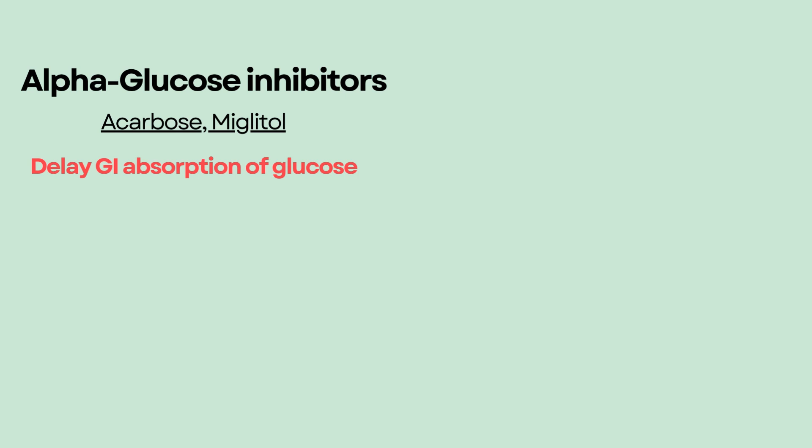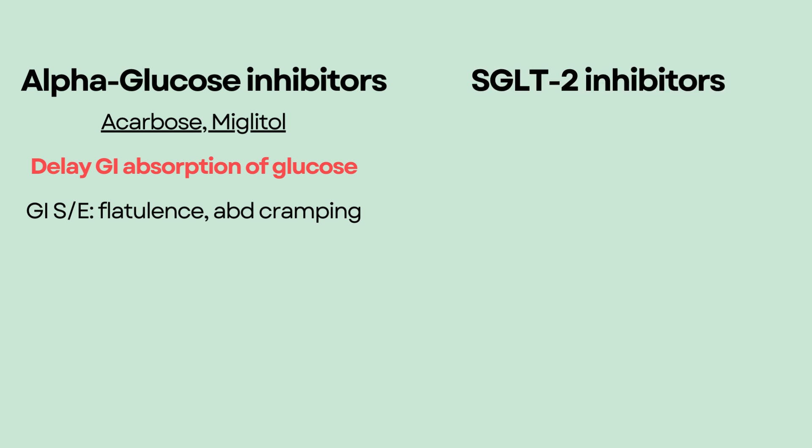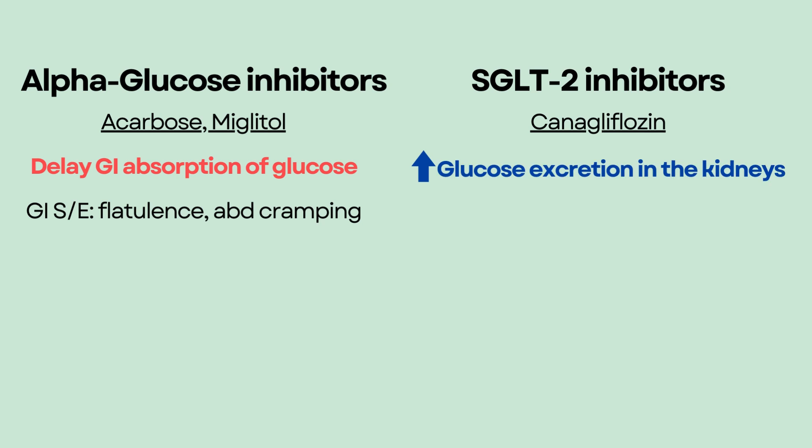Because alpha-glucosidase inhibitors delay GI absorption, GI side effects such as flatulence and abdominal cramping can occur. SGLT2 inhibitors, such as canagliflozin, work by increasing glucose excretion by inhibiting SGLT2 in the kidneys. They can cause frequent urination and genital infections.